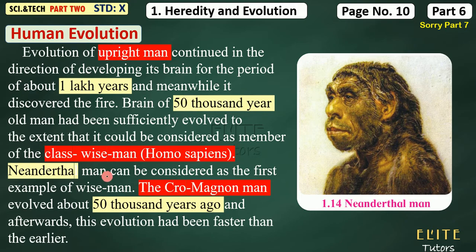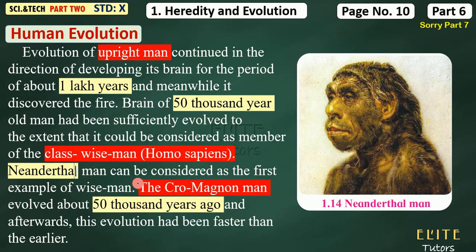Neanderthal man can be considered as the first example of wise man — Homo sapiens. Then the Cro-Magnon evolved about 50,000 years ago. It seems that both Neanderthal man and Cro-Magnon man coexisted for a time, fighting and hunting. Then the Neanderthal man died out and the Cro-Magnon man remained. Evolution became faster after the Neanderthal and Cro-Magnon.